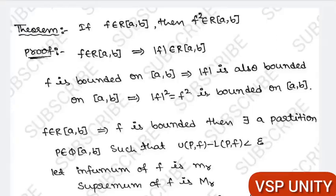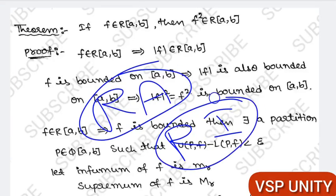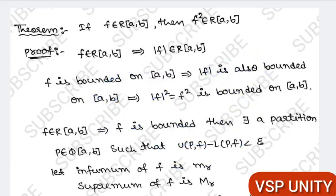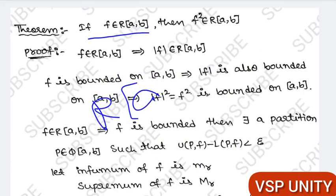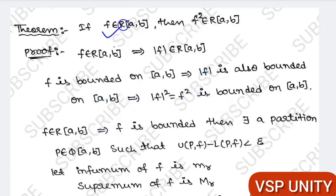Hello everyone. The next theorem in real analysis is on Riemann integration — an important short answer question. The theorem states: if f is Riemann integrable on [a, b] (denoted R[a, b]), then f² is also Riemann integrable on [a, b]. So if f is Riemann integrable, we have to show that f² is also Riemann integrable.